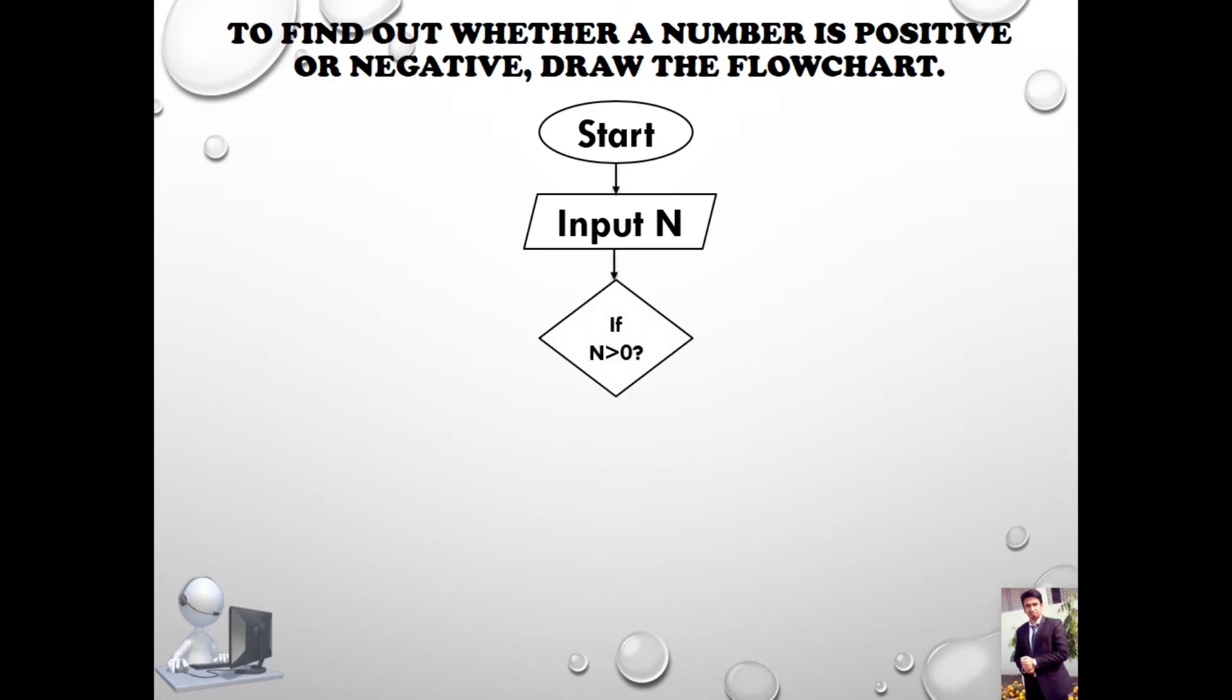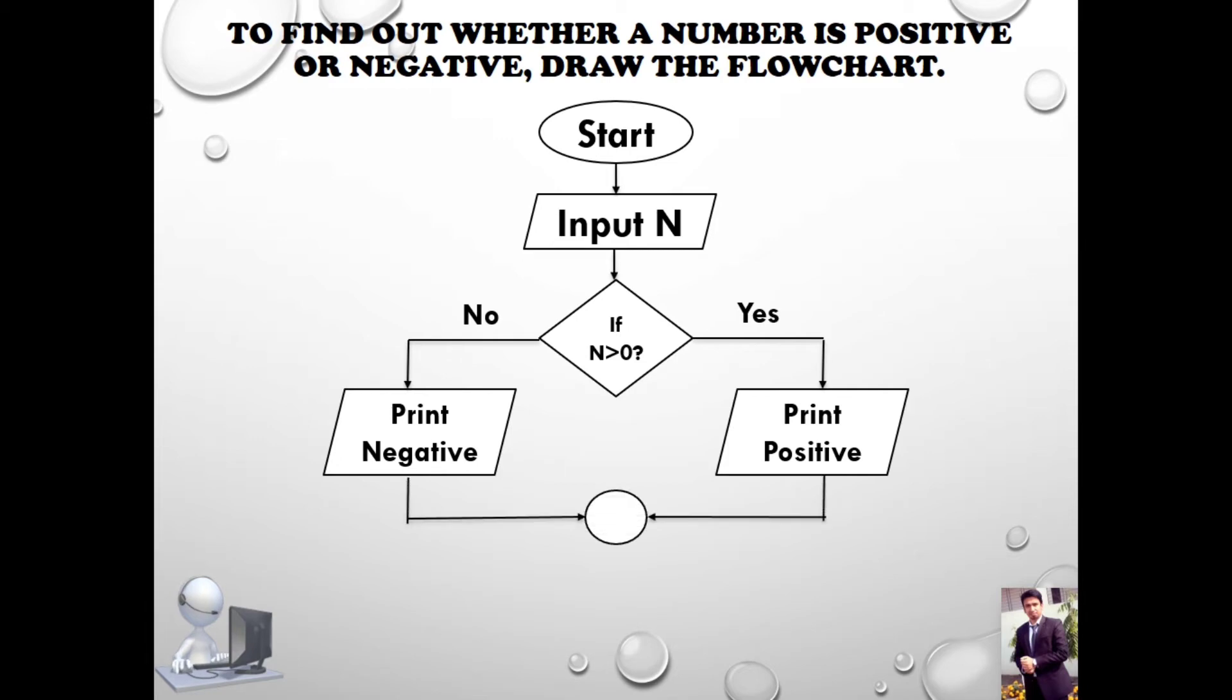This is input N. Then a diamond shape—this is the condition: if N is greater than zero, then if yes, it will be a positive number. Otherwise, if no, then it will be a negative number. So we have to connect positive and negative number by a connector, and then we have to stop.